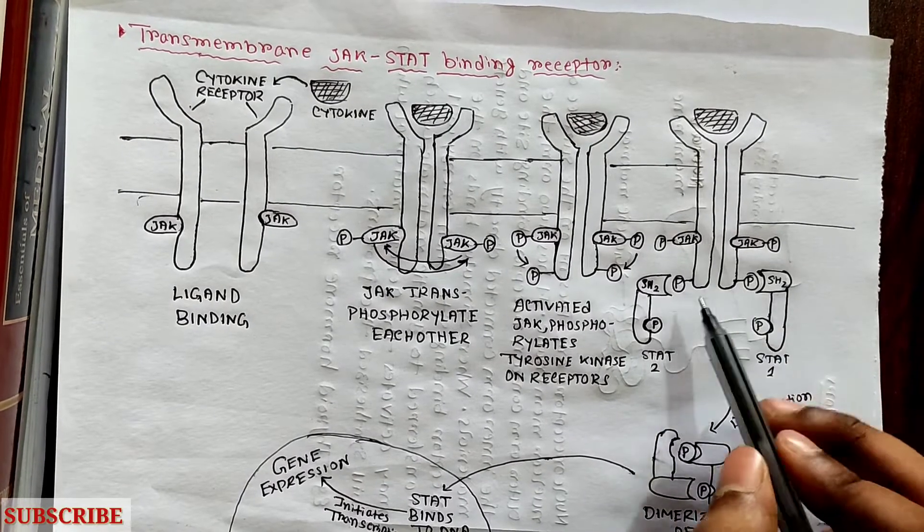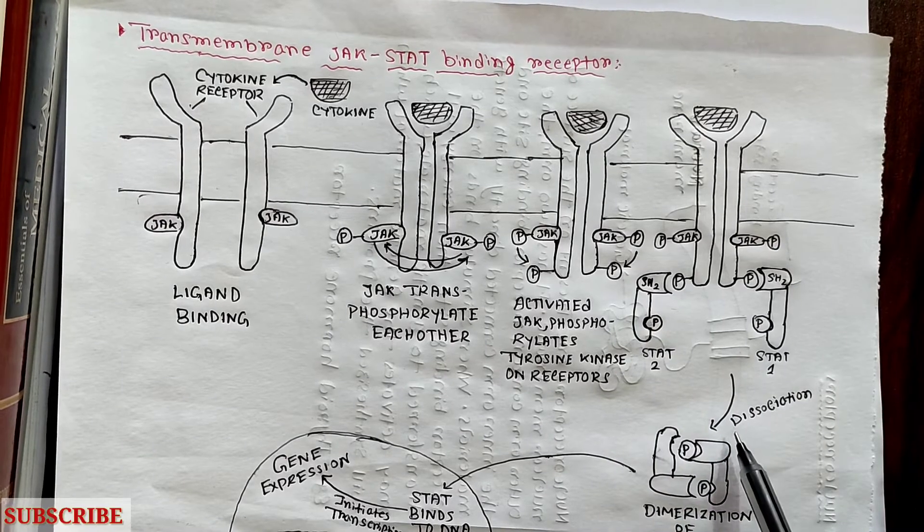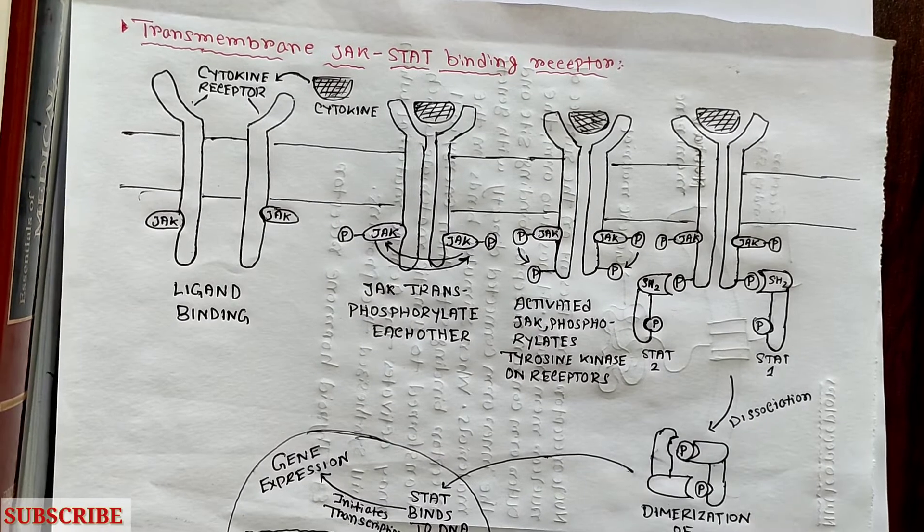Then the JAK will phosphorylate the STAT and it will dissociate from the receptor. Another STAT will be dissociate and bind with each other and form dimerization.